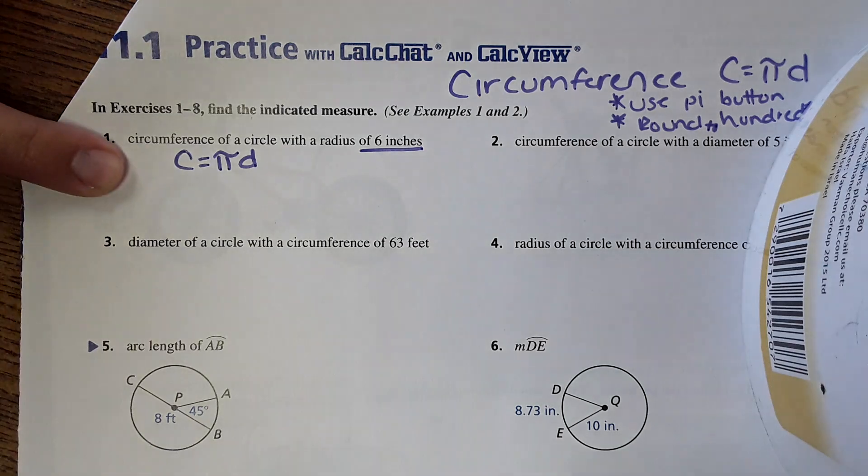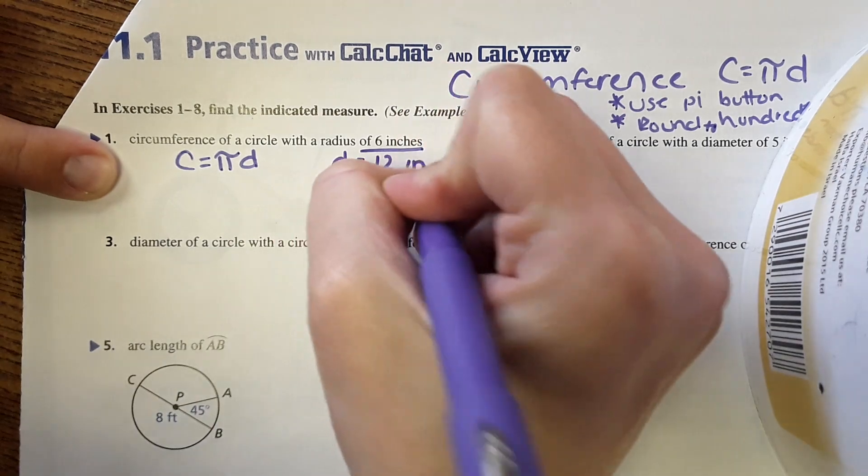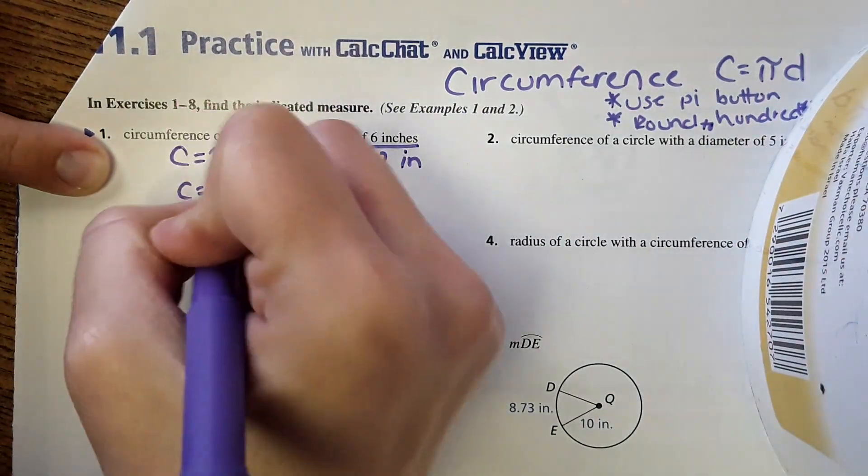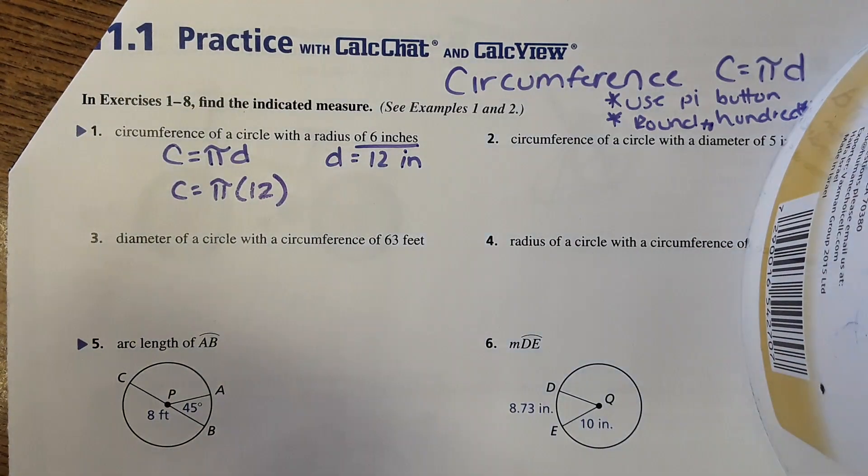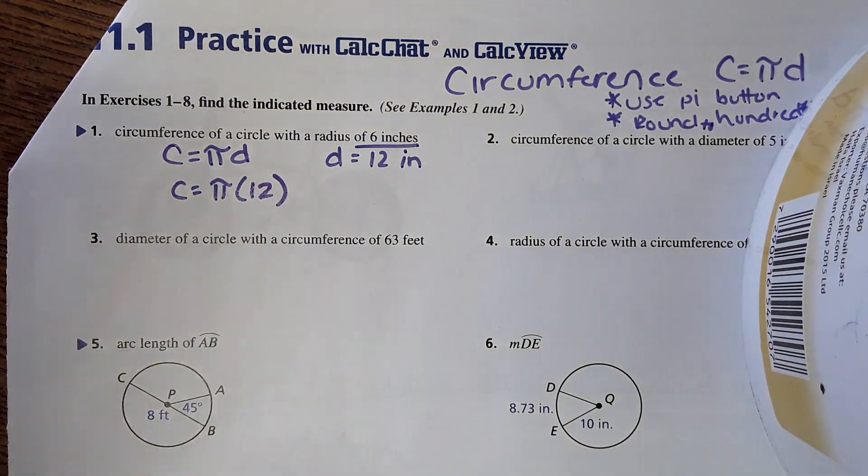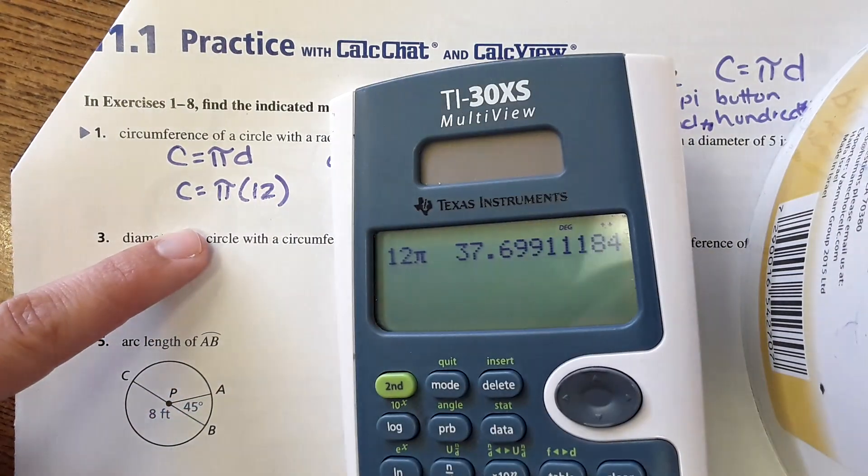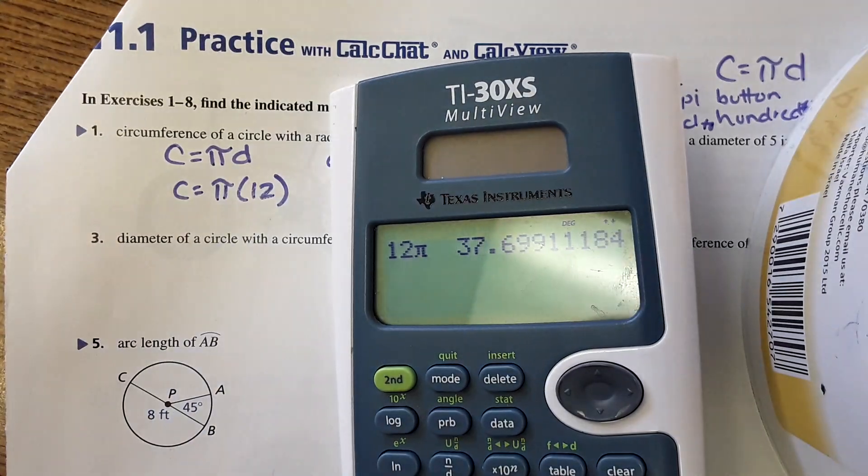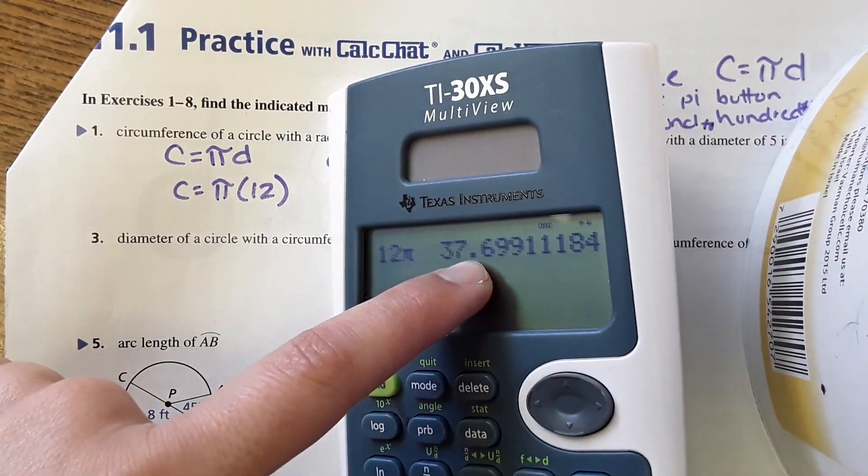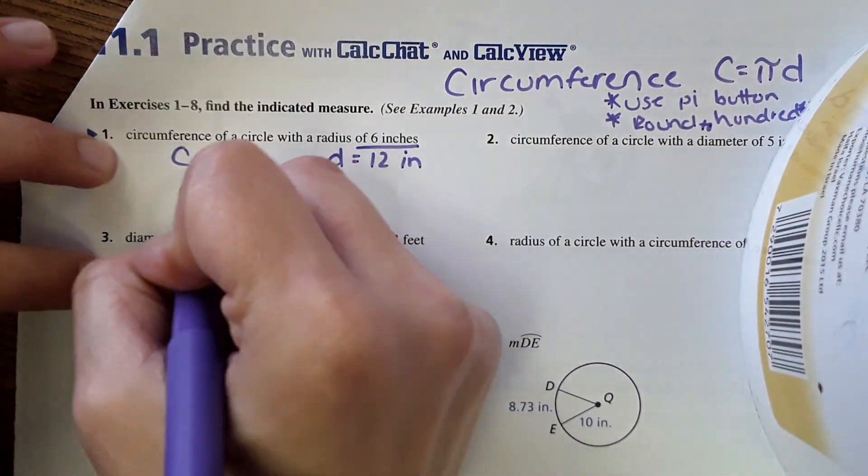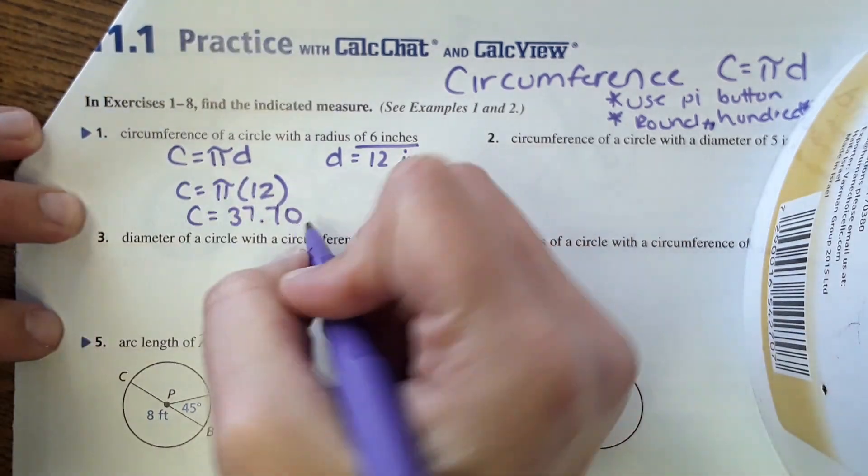Okay, so circumference equals pi times diameter. It gives us the radius, so diameter would be double that which is 12 inches. Then circumference equals pi times 12. We do 12 pi in the calculator and you get this lovely number which you would then round to two decimal places, so thirty-seven point seven zero inches.